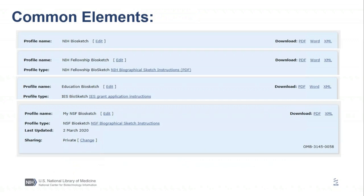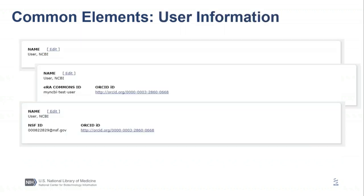Once you hit Create, you are ready to enter your information. All biosketches share the following common components: the profile name or title, the profile type (NIH, NIH Fellowship, IES, or NSF), the last time the file was updated, the ability to share, and download options and OMB information. Note that NSF documents — the biosketch and current and pending support — only have PDF and XML versions available, as required by the NSF Proposal and Award Policies and Procedures Guide. The next field is pre-filled with your name and any linked accounts such as eRA Commons, NSF, or ORCID.